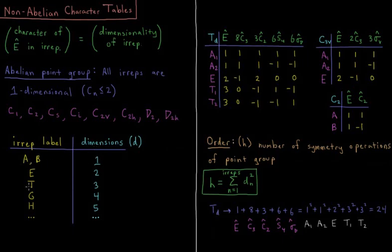There are also irreps that have the label E or Eg or E1 or E prime, and those have a character of two under the identity, meaning that those are two-dimensional irreducible representations. You can also find T in some cases.